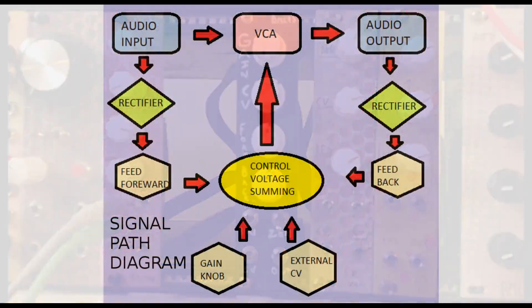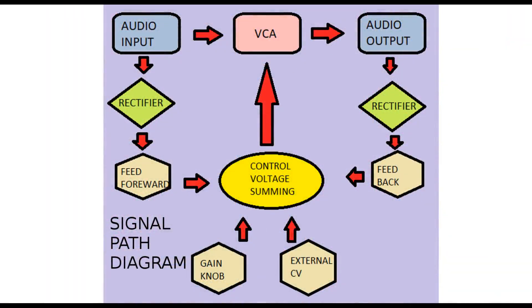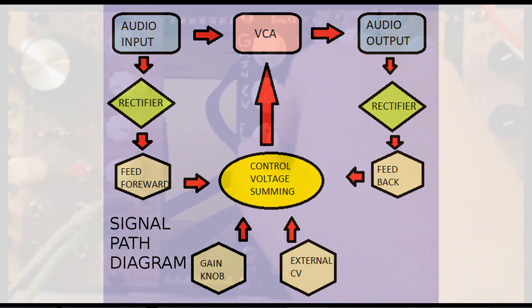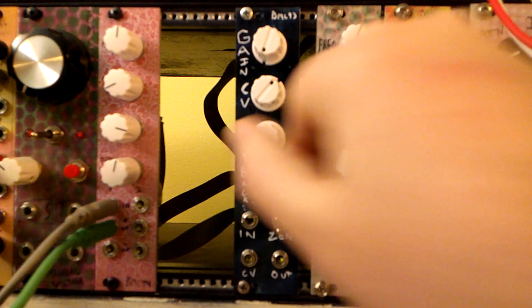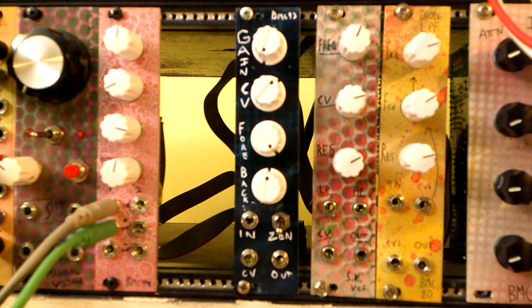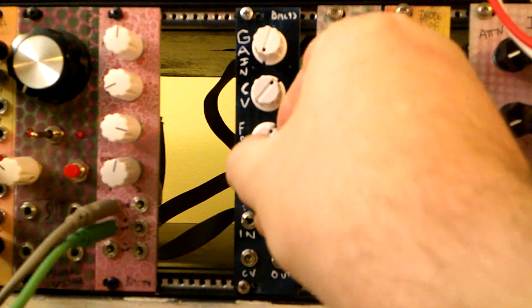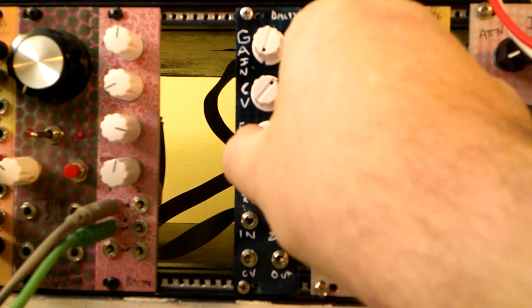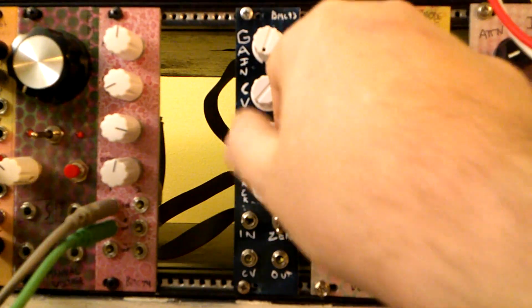But the really interesting thing about it is it has these two knobs, feedforward and feedback. So on the input signal and on the output signal, there are full-wave rectifiers. When you turn the feedforward to the right, you're putting positive feedforward from that rectifier. And when you're turning it to the left, you're taking negative feedforward from that input rectifier.